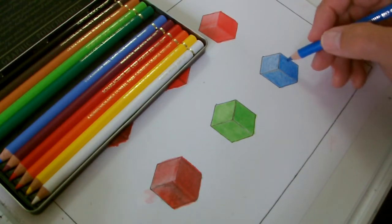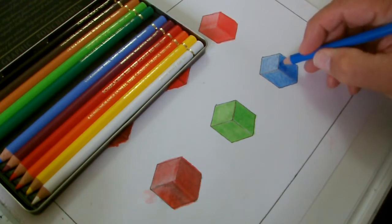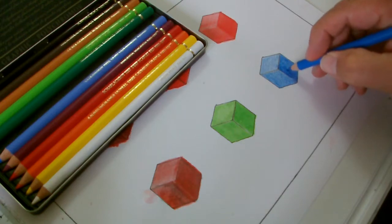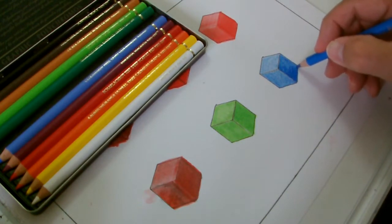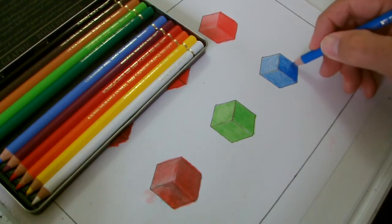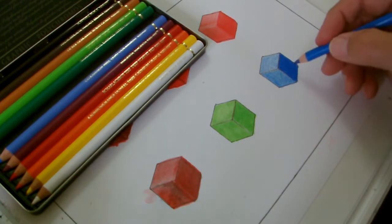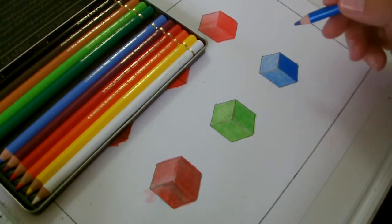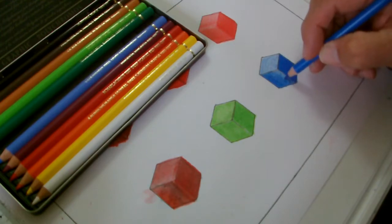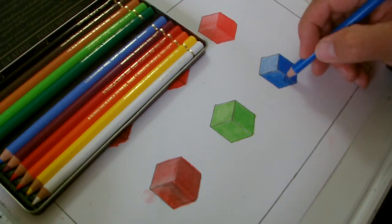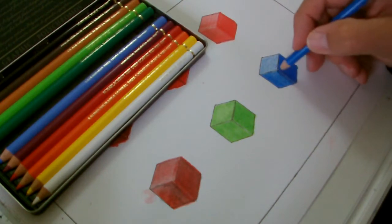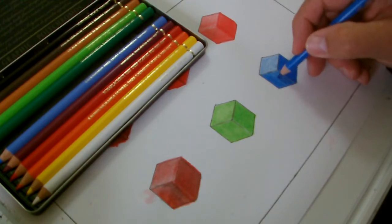We'll start with the dark side first. Applying heavy pressure. Not so heavy that the lead would break. Still doing the little ovals. Look at the difference that's done now. Obviously, I'm not applying as much pressure on this side. Otherwise, it'll end up the same as the one on the right. Little ovals. Crossing over.